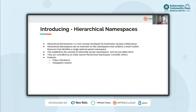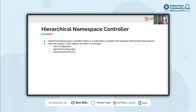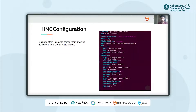Coming to the hierarchical namespace controller — HNC is a Kubernetes controller that manages hierarchical namespaces. HNC mainly reconciles three types of CRDs: the first is HNC Configuration, the second is Hierarchy Configuration, and the third is Sub-namespace Anchor. The HNC Configuration is a single non-namespaced object named 'config' that defines the behavior of the entire cluster. It should be modifiable only by cluster administrators and contains information about what Kubernetes objects we want to propagate down the hierarchy.